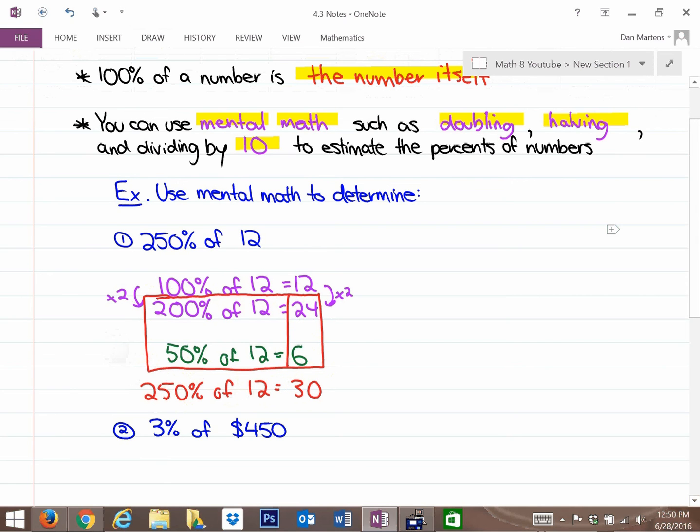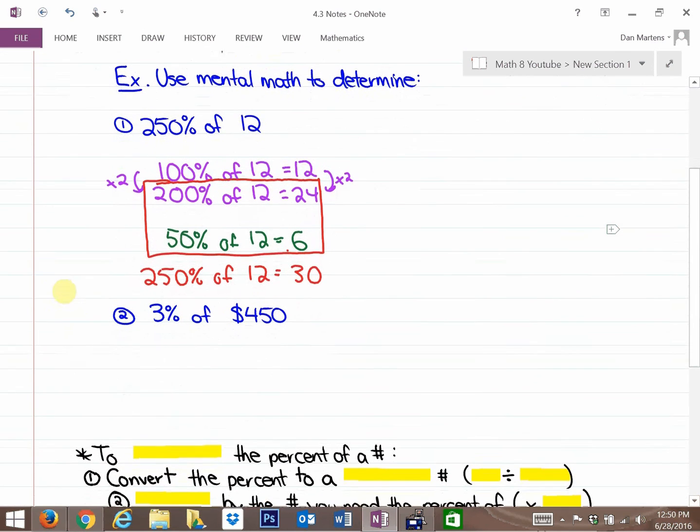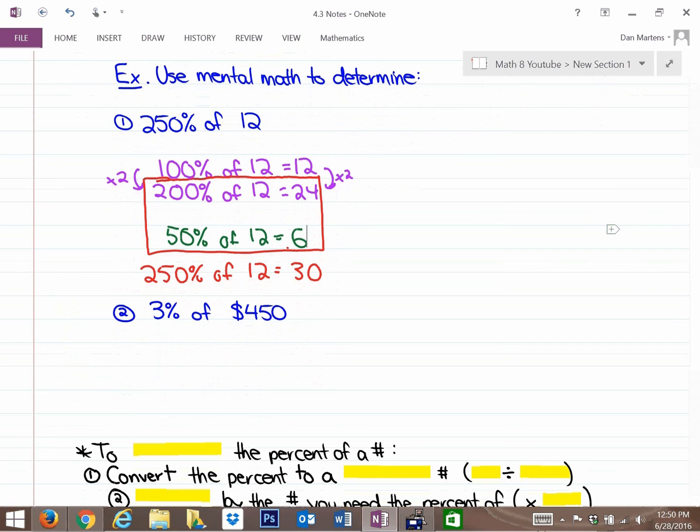I'm just combining those two numbers. If 200% is 24, if 50% is 6, then 200 and 50% would have to be 30, which is a neat way of doing it. There's other techniques to try in these problems, but let's try another one.